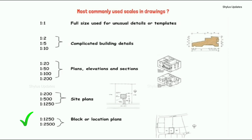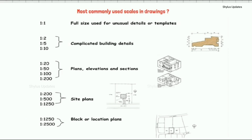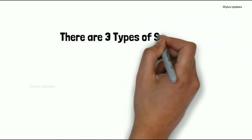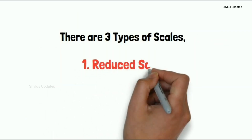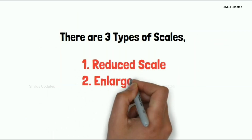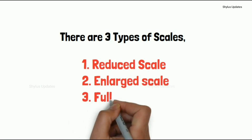Next, 1 to 1250 and 1 to 2500 are used for block or location plans. There are 3 types of scales: reduced scale, enlarged scale, and full scale.